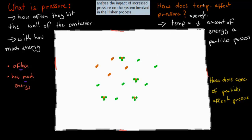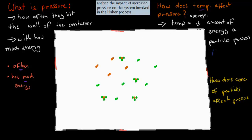How does temperature affect pressure? Remember, what is temperature? Temperature is the average amount of energy a particle possesses. I said that energy is important, because if one of these particles hits with more energy, that means it's going to cause more pressure as well. So obviously, if we increase our temperature — since temperature is basically how much energy a particle has — that also means we're going to be increasing pressure.